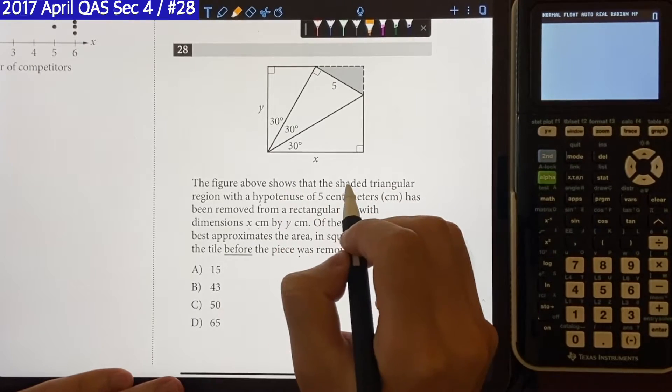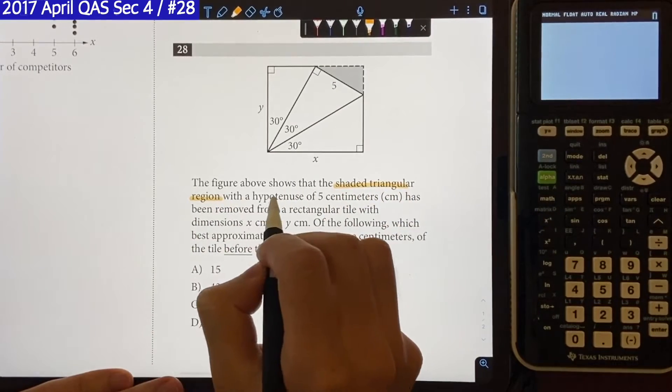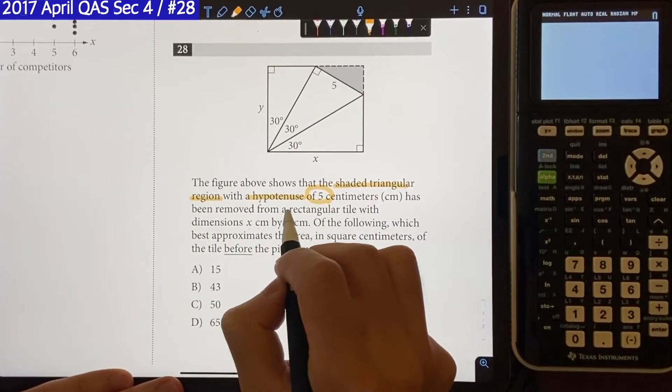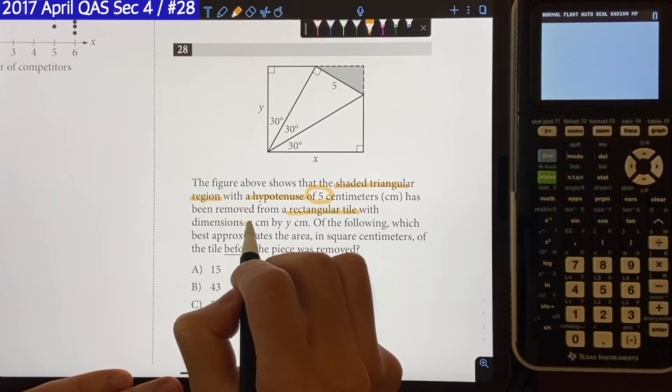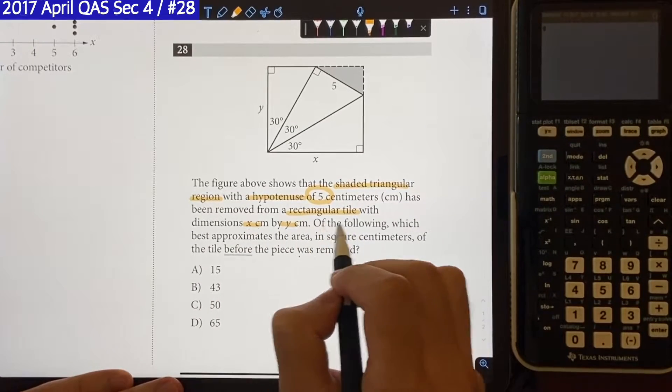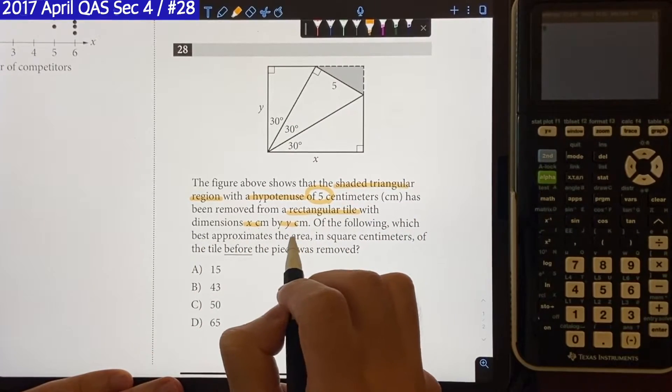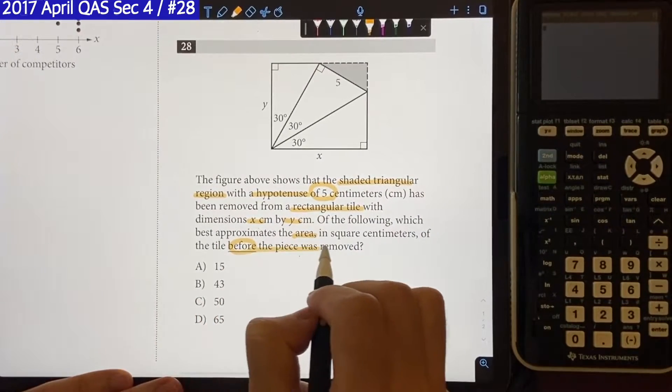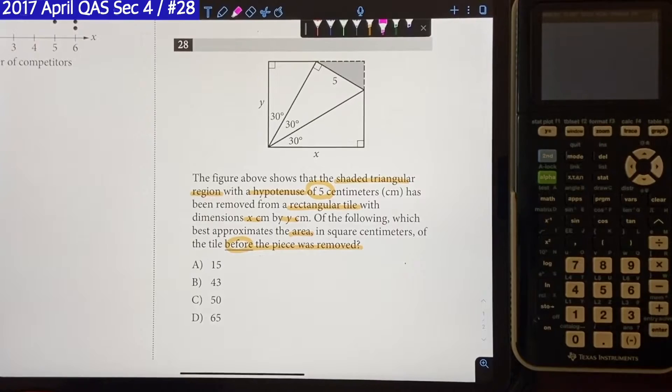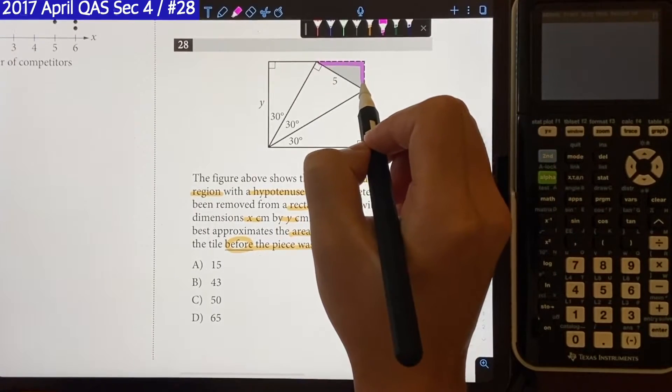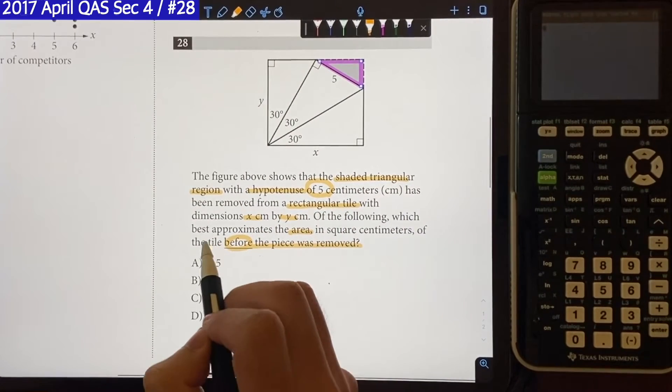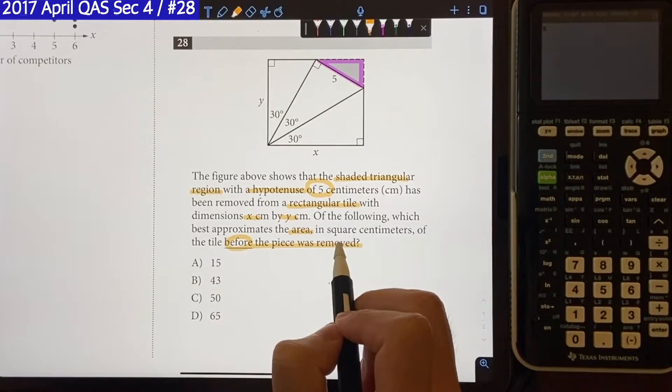So the question says, the figure above shows the shaded triangular region with a hypotenuse of 5 centimeters that has been removed from a rectangular tile with dimensions of x and y centimeters. Of the following, which best approximates the area in square centimeters of the tile before the piece was removed? So essentially what's going on is we have this triangle piece that was removed from the rectangular piece, but the question is asking us to find the area of the tile before the piece was removed.